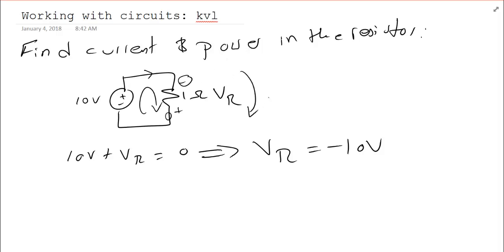So this drop is negative 10 volts, which means this drop, or this voltage change, is positive 10 volts. Remember, when you get a negative, you flip the sign, and you also flip the direction of the arrow.